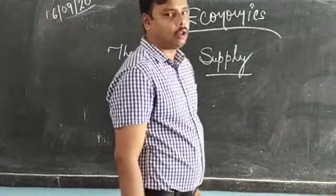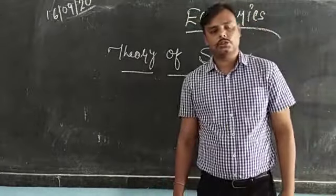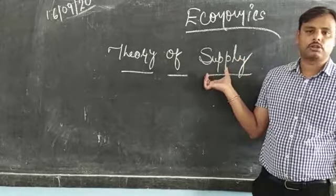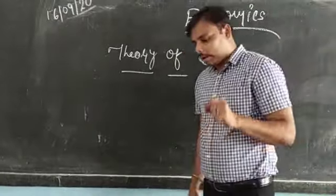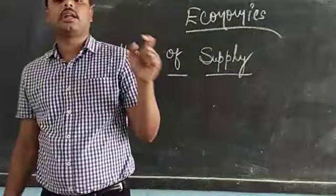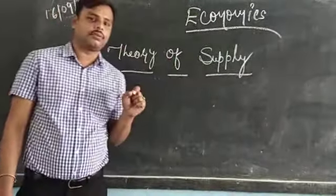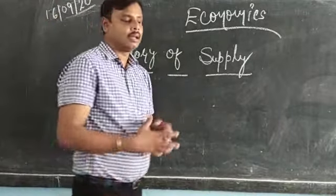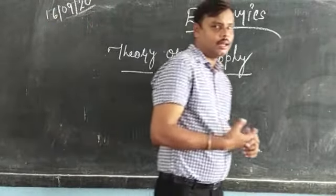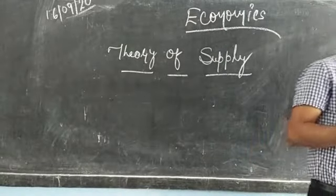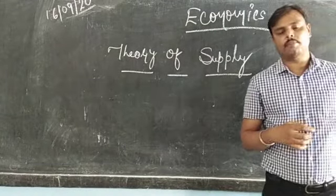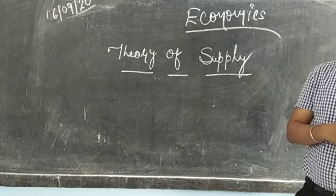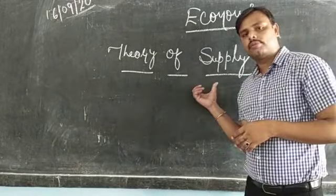You have studied the Law of Demand, here you have the Law of Supply. You have studied the definition of Demand, here you will understand the definition of Supply. You have understood the relation between Price and Demand — there an inverse relation was there. Here a direct positive relation is there, as opposed to the opposite relation in Theory of Demand.